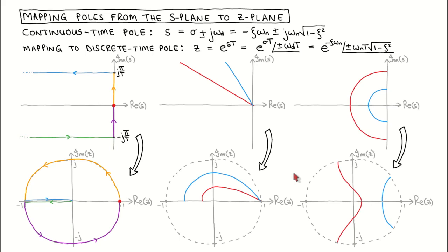When we look at the mapping for constant damping and constant natural frequency, we see that in the low frequency region the interpretation of a pole's location is similar to that of the s-plane. However, for the higher frequency region, the interpretation differs significantly.